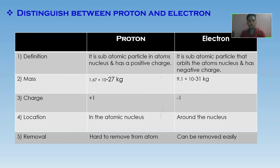Removal: protons are hard to remove from atom, and electrons can be easily removed as compared to proton, as proton is situated inside the nucleus and electron is outside the nucleus.